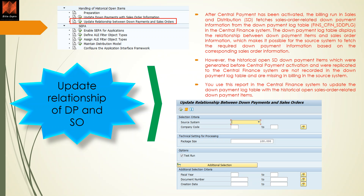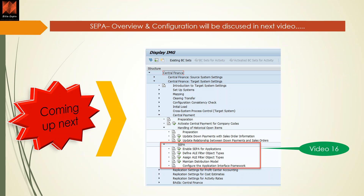This is very important information on how to handle historical open items — it is mostly related to down payments. For AP invoices, the clearing process has already been mentioned in another video covering the transfer process before and after central payment activation. This video explains how down payments and documents are managed when sales order information is missing and how to fetch that information into the BSEC and AC docker table.